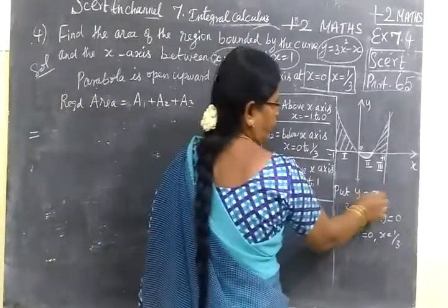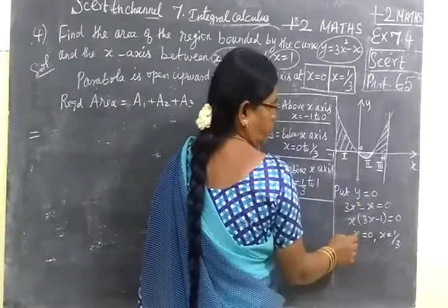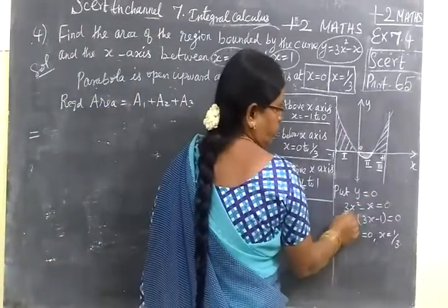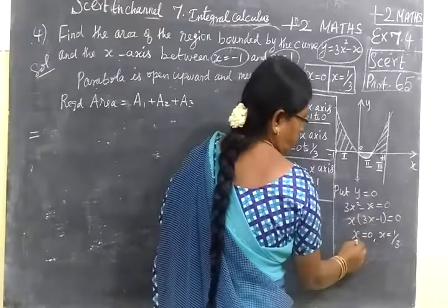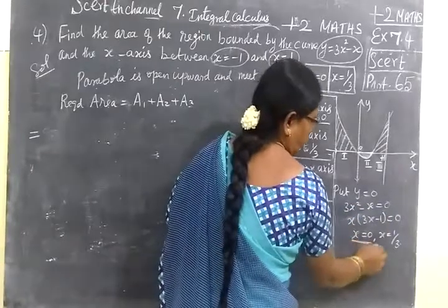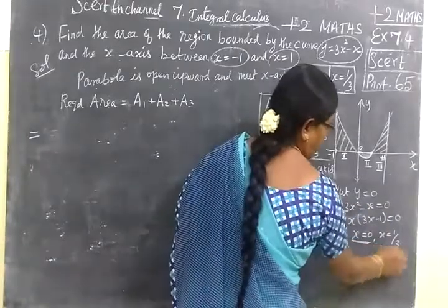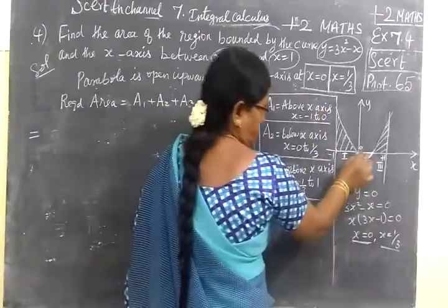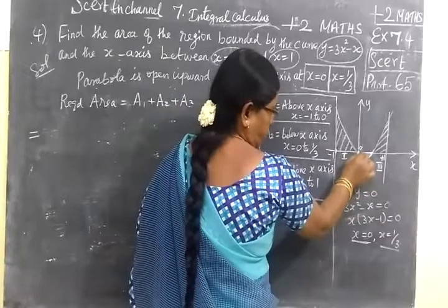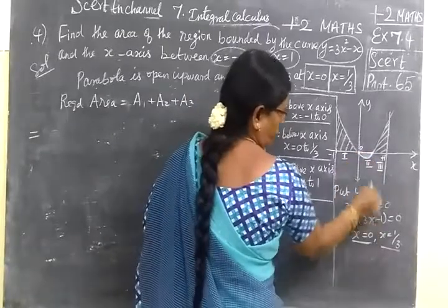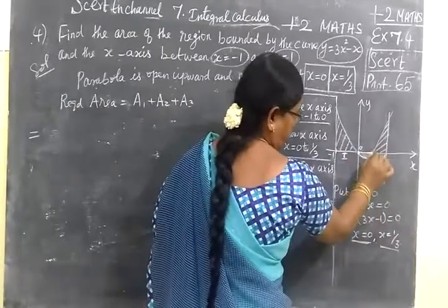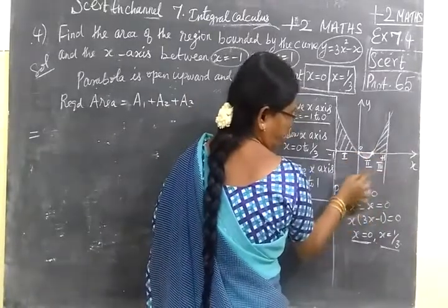Put y equal to 0. So y equal to 0 gives x equal to 0 and x equal to 1 by 3. So x equal to 0 and x equal to 1 by 3 are the intercept points.